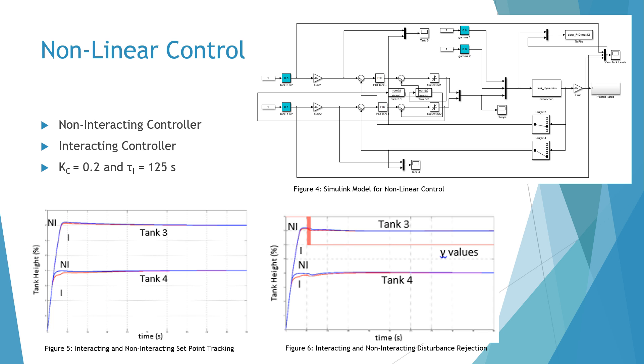Results were quite similar to the linear model where the non-interacting and interacting controller both had acceptable performance while the non-interacting was a little faster. The interacting did compensate better for the different manipulated variables.